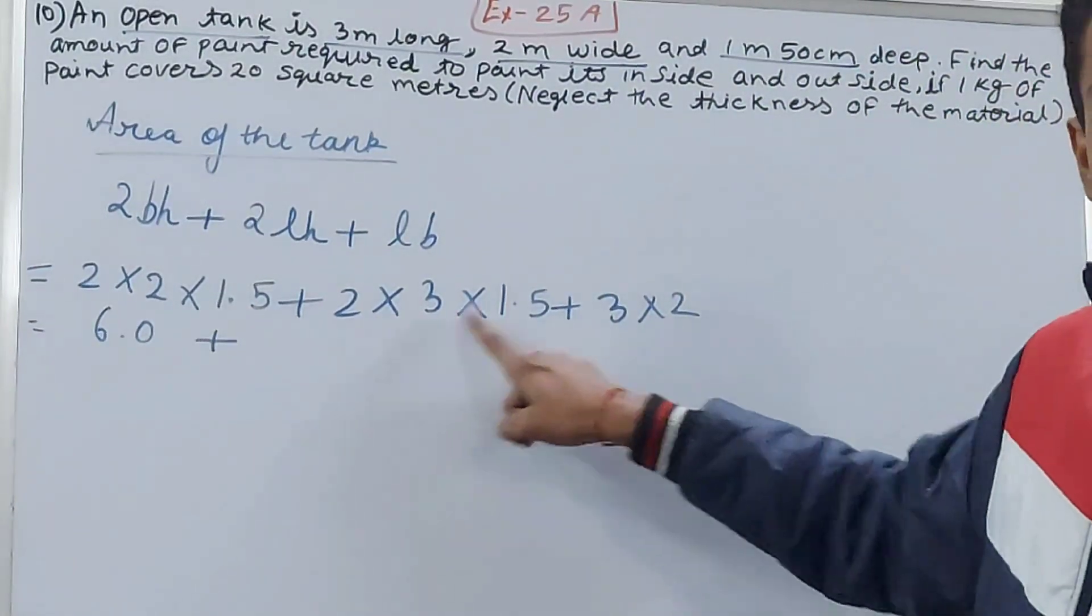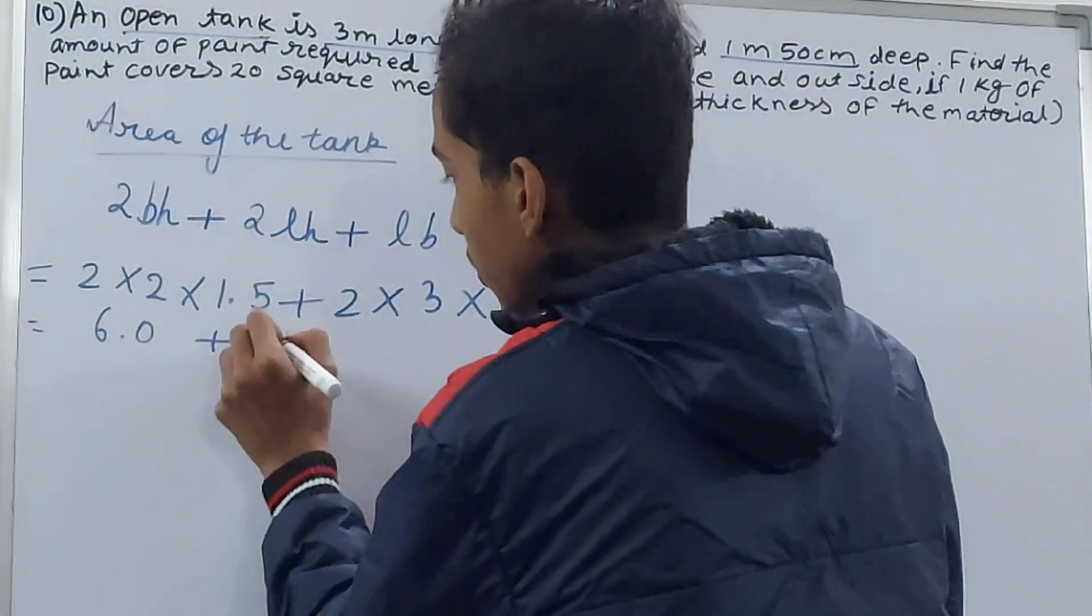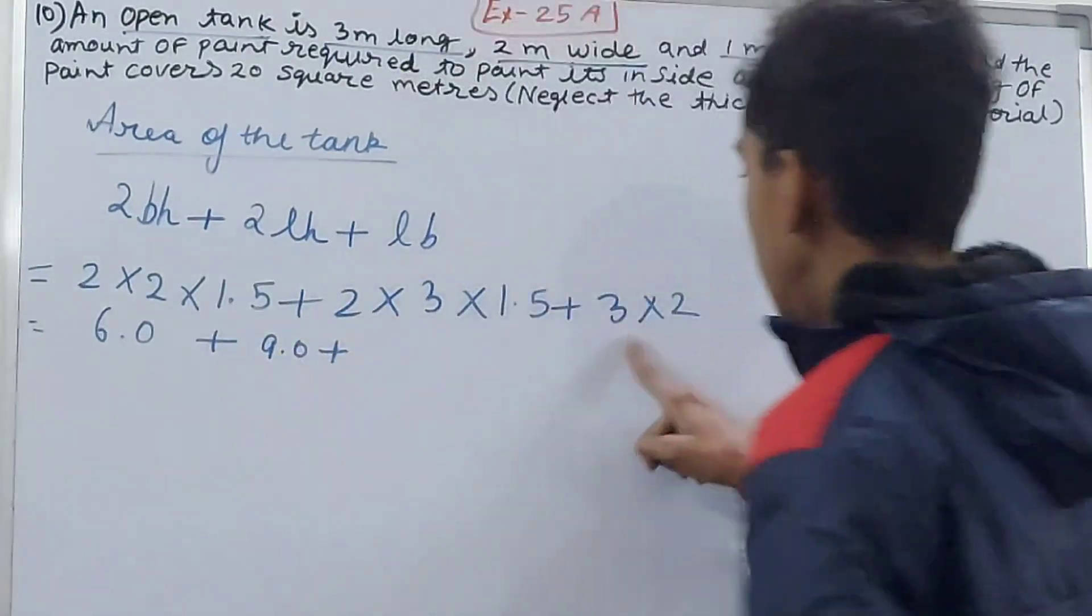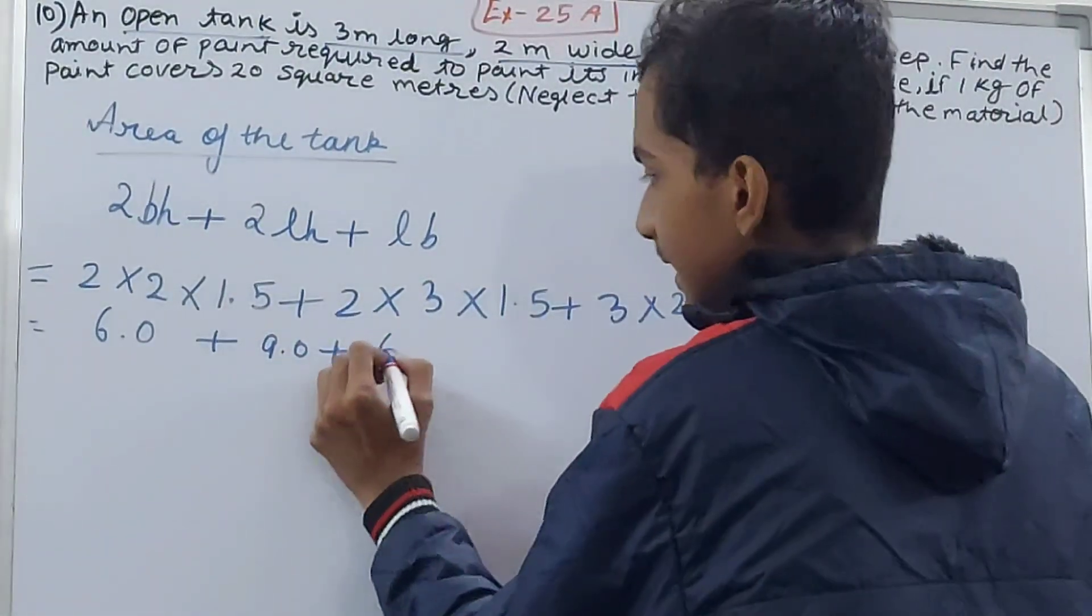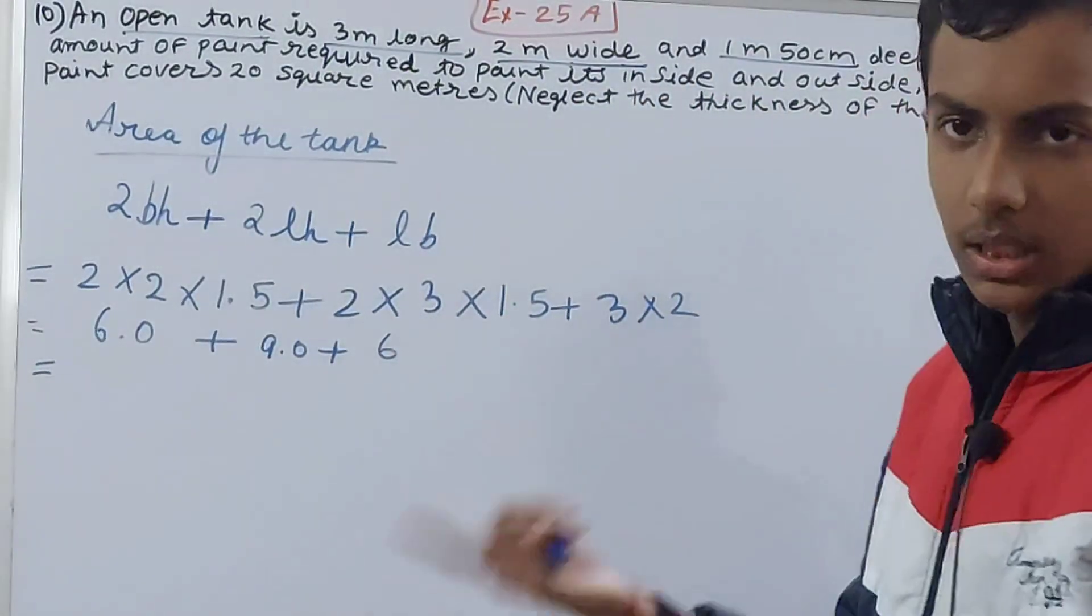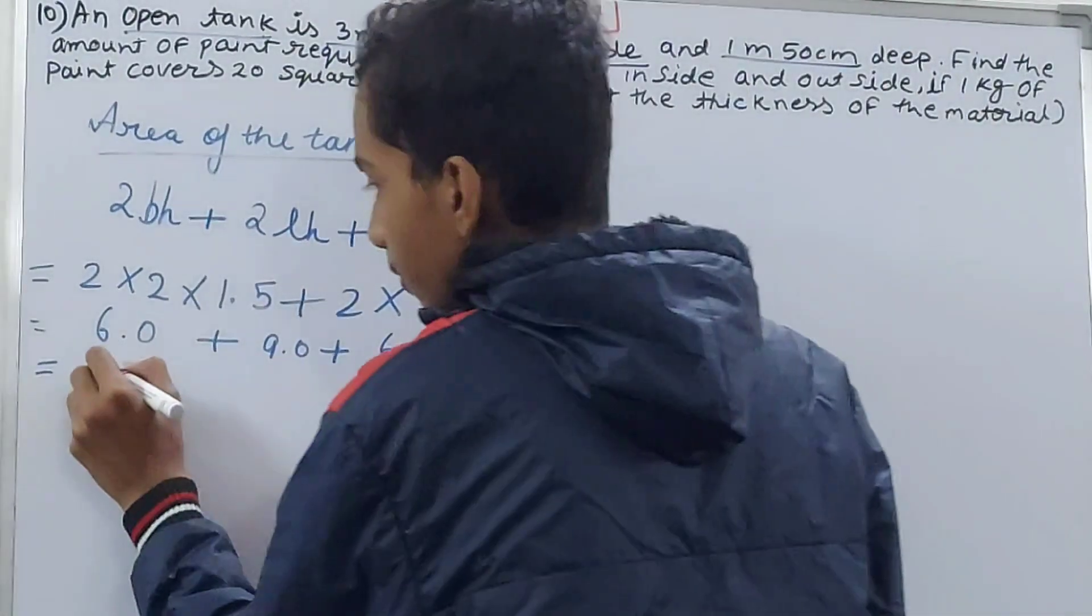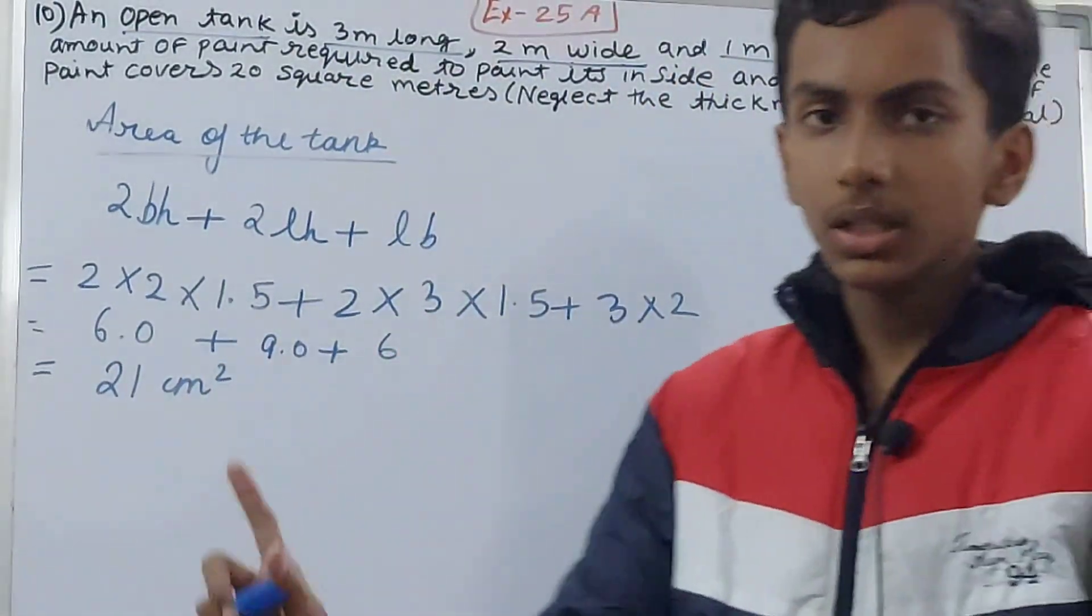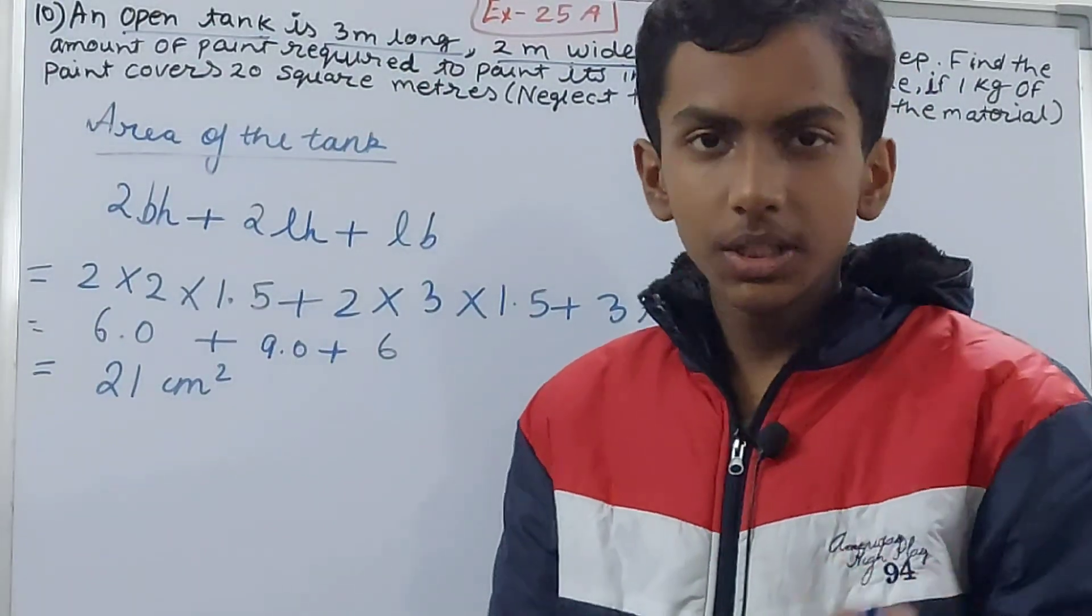See, 2 into 2 is 4, 4 into 1.5, that's 6.0, plus 2 into 3 is 6 into 1.5, that's 9.0, plus 3 into 2, that's my 6. So we have 6 plus 9 plus 6, so that's 21 square centimeters. This is the area of the tank, but remember this area is only for the inside.